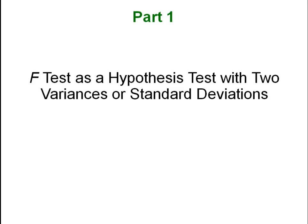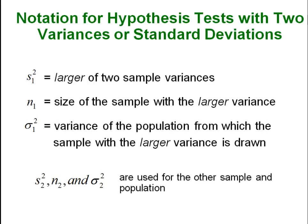The F test as a hypothesis test. When we are dealing with two variances or two standard deviations and we are trying to conduct a hypothesis test on those two measurements, we are going to use the F test. The notation we will use has s-squared being a variance. We will have s-sub-1-squared for the variance of one group, and we always let s₁ be the larger of the two. S-sub-2 is the smaller variance from the two groups.